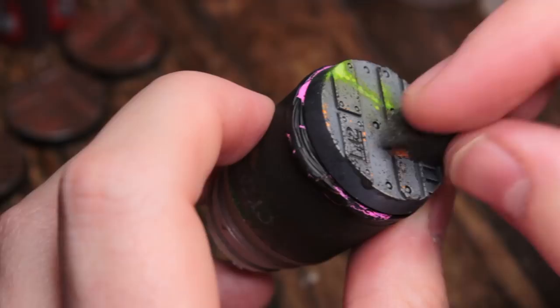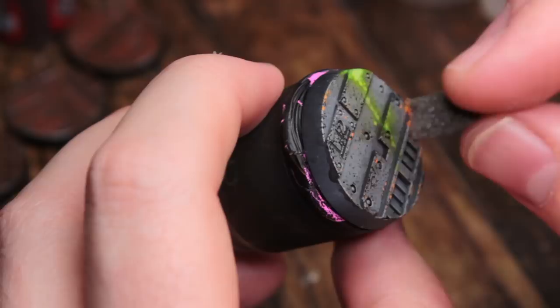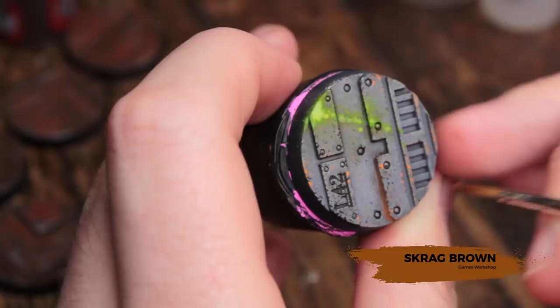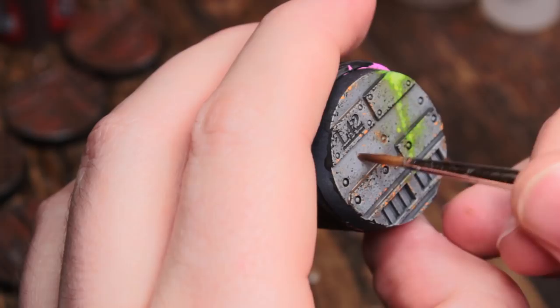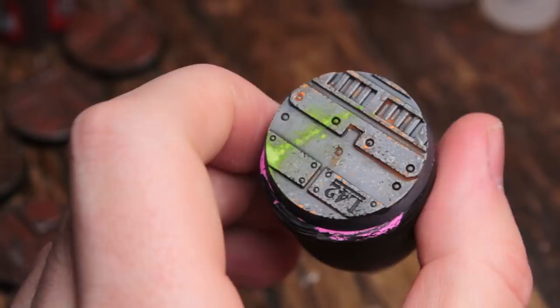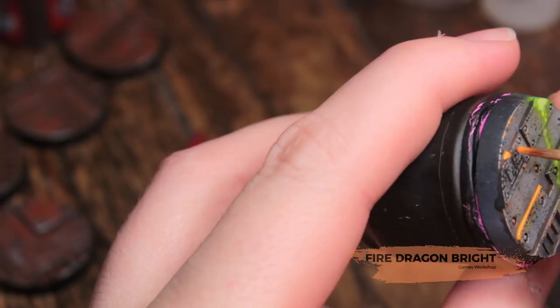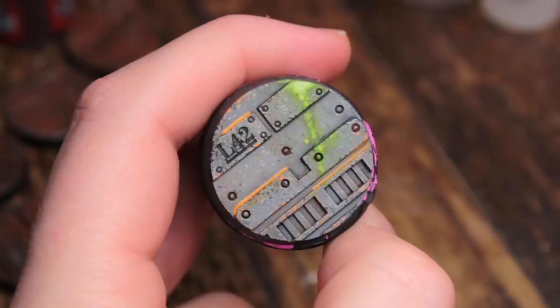Now I'm going to take some Fire Dragon Bright and a piece of sponge. We're going to create some slightly rusty areas on our tiles. And some very watered down Scrag Brown. This is almost a wash consistency. It's so thin. And we're just going to wash this into any nooks and crannies that we want some rust to have built up in. And then we're going to do the same with some Fire Dragon Bright, only on a few areas though now. Once it dries, it dries a lot darker.